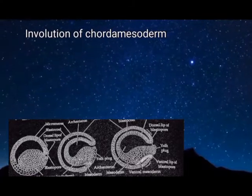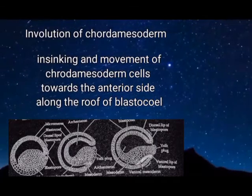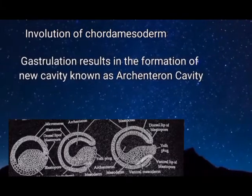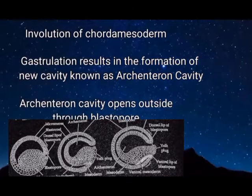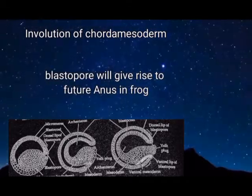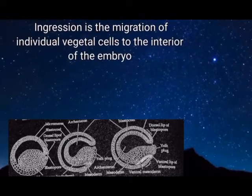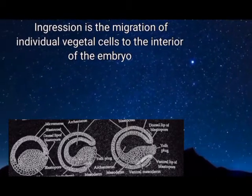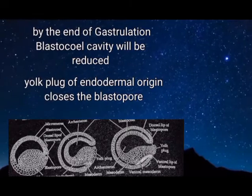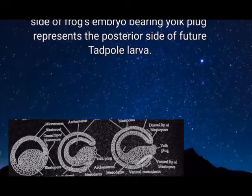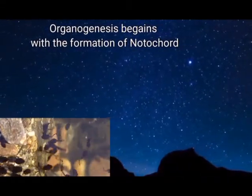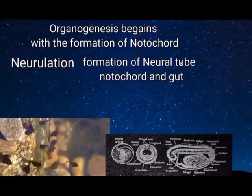The third morphogenetic movement of gastrulation is involution of chordamesoderm — the in-sinking and movement of chordamesoderm cells towards the anterior side along the roof of the blastocoel. Gastrulation results in the formation of a new cavity known as the archenteron, which opens outside through the blastopore. The archenteron is present in the lumen of the future gut. The blastopore will give rise to the future anus in frog. Ingression is the migration of individual vegetal cells to the interior of the embryo. By the end of gastrulation, the blastocoel cavity is reduced and the yolk plug of endodermal origin closes the blastopore.